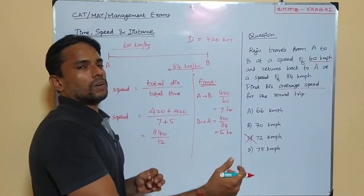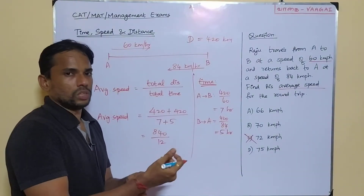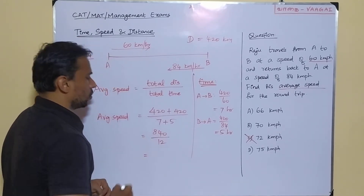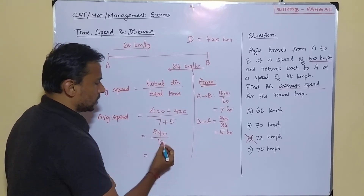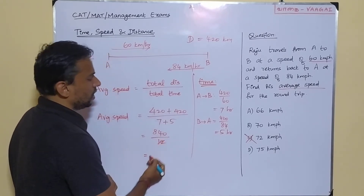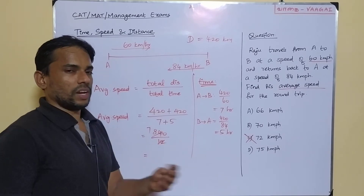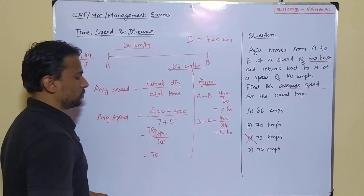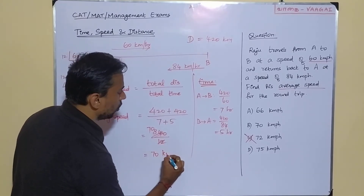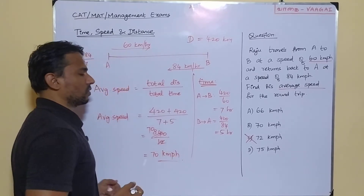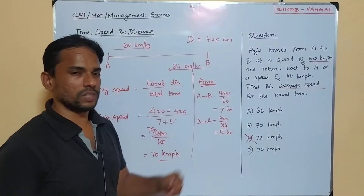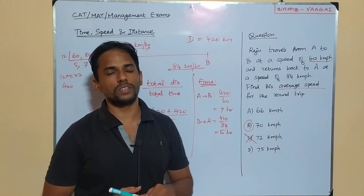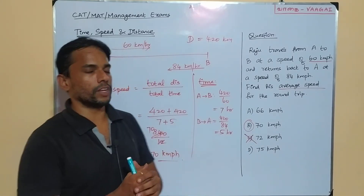So if we take this ratio — 840 divided by 12 — that gives the average speed. 12 sevens are 84, so 840 divided by 12 is exactly 70. The answer is 70 kilometers per hour. And our answer is at option B — 70 kilometers per hour is the correct answer for this average speed question.